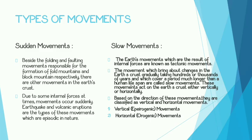Slow movements take place so slowly that even a human's full lifespan of 80 years is not enough — they keep on going. These movements act on the earth's crust either vertically or horizontally. So slow movements can be of two types: vertical and horizontal. Based on these directions, vertical is called epirogenic and horizontal is called orogenic.